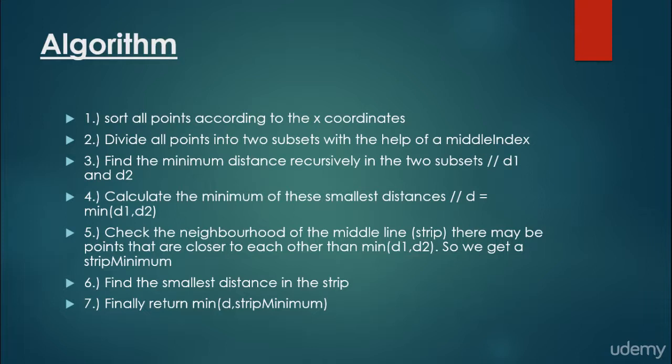In dynamic programming, subproblems are overlapping, which means we have to track a dynamic programming table and memorize values in order not to calculate them over and over again. In divide and conquer, the subproblems are not overlapping, meaning we do not need a dynamic programming table, no memoization, and no storing values in a two-dimensional array. We calculate subproblems that are independent of each other.